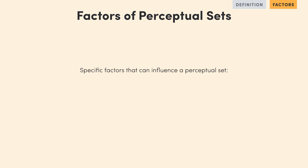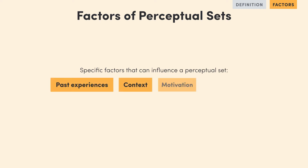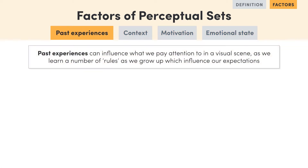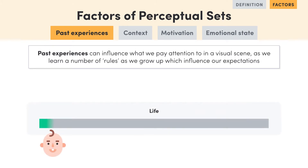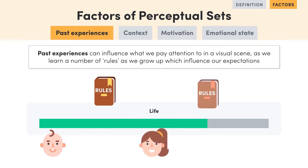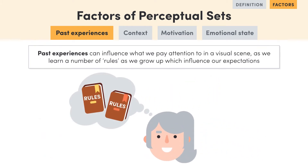These include past experiences, context, motivation and emotional state. So the first factor that can influence what we pay attention to in a visual scene is our past experience. As we grow up, we learn a number of rules over time, which influence our expectations and the way we see the world.